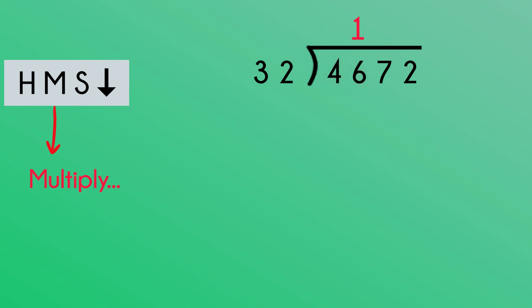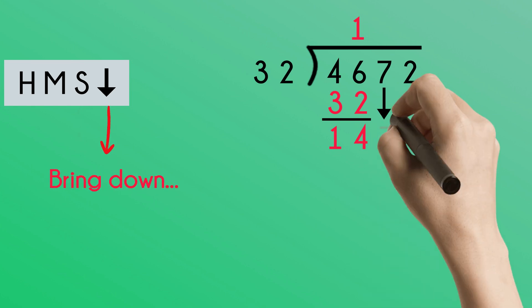Next, we multiply. 32 multiplied by 1 is 32. And now we subtract. 46 subtract 32 is 14. Now we bring down the 7 and we start the process again.